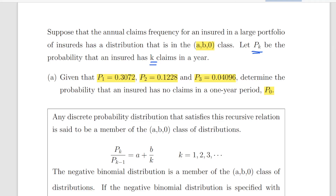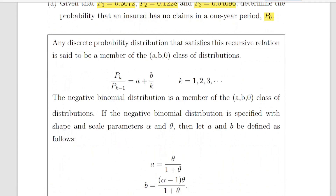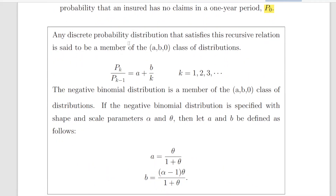We're not actually told explicitly that this is a negative binomial distribution, but just for the sake of simplicity we'll work on the basis that it is. Any discrete probability distribution that satisfies the following recursive relationship is said to be in the AB0 class: the ratio P(K) divided by P(K-1) is equal to A plus B divided by K.